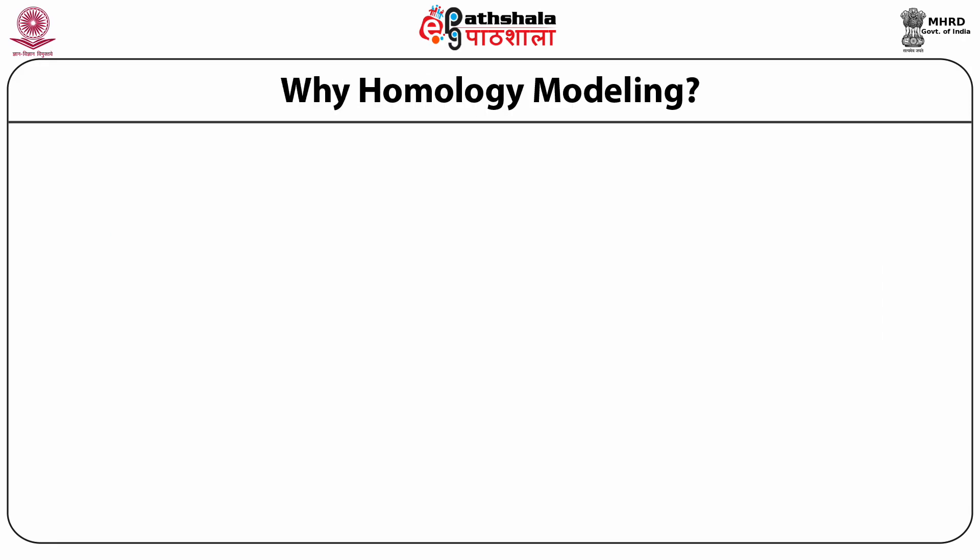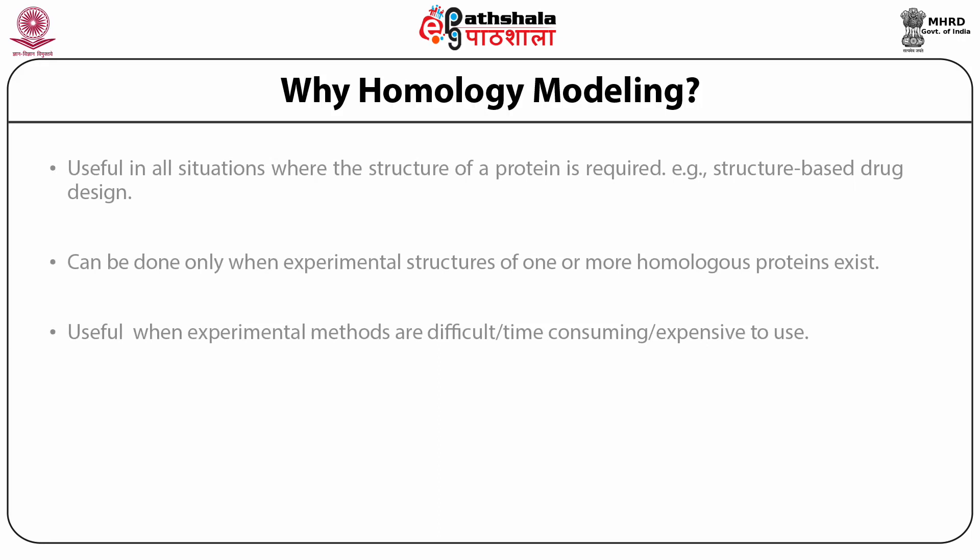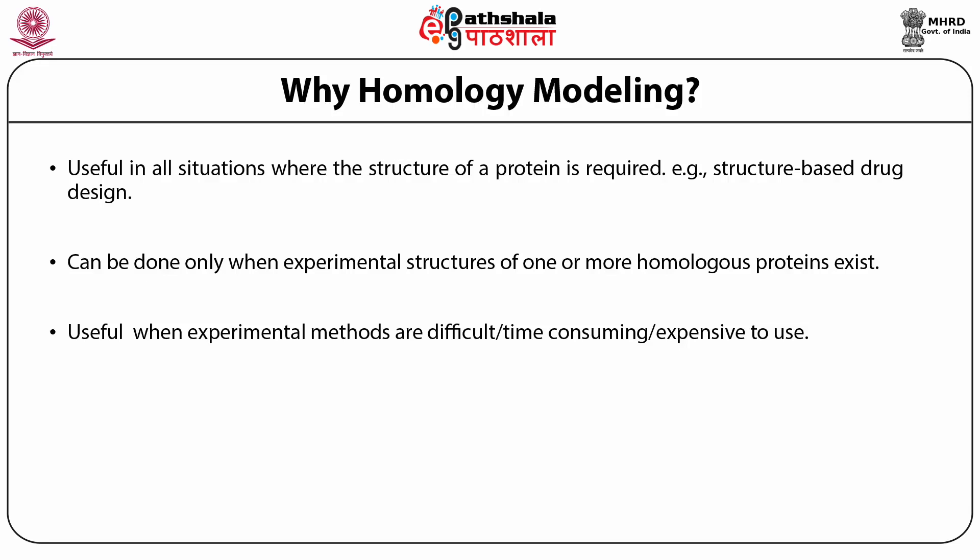Now why should we do that? It is useful in all such situations where the structure of a protein is required — for example, for structure-based drug discovery, you need the structure of a receptor. In your particular case, you might not have that structure at hand, but if you have the structure of a related receptor, you can take your sequence and hopefully predict the structure well enough for your purpose.